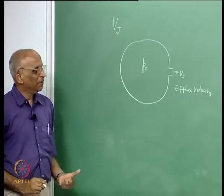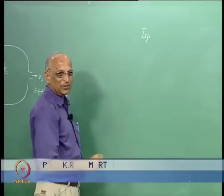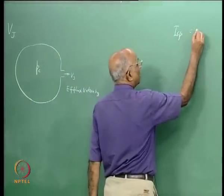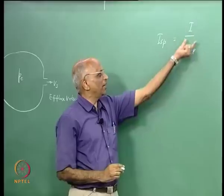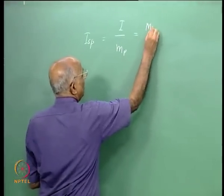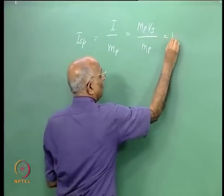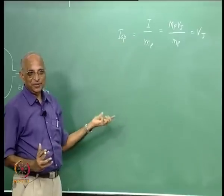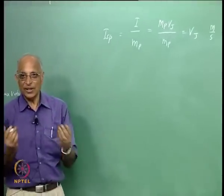However, before I do that, since there was a question about specific impulse and its units, let us spend two or three minutes on this issue. What was specific impulse? We told ourselves specific impulse is equal to I divided by the mass of the propellant — the impulse generated by mass of propellant M_P. The change of momentum equals M_P times V_j divided by M_P, which equals V_j. So the unit of specific impulse should be meters per second, the same as the efflux velocity V_j.